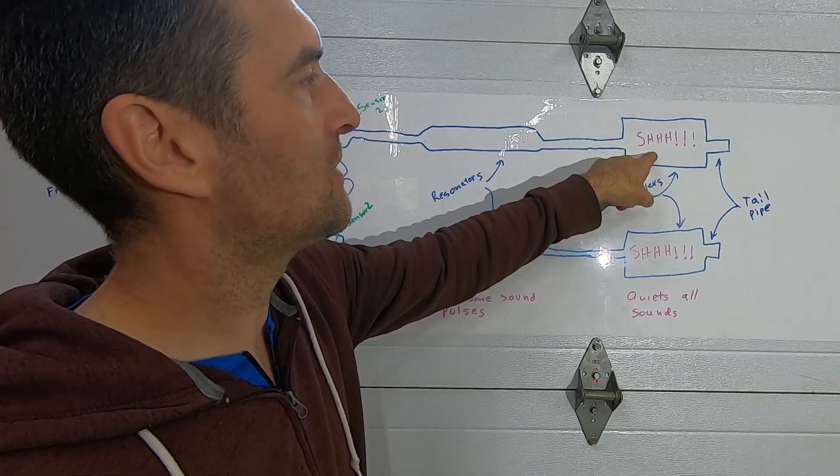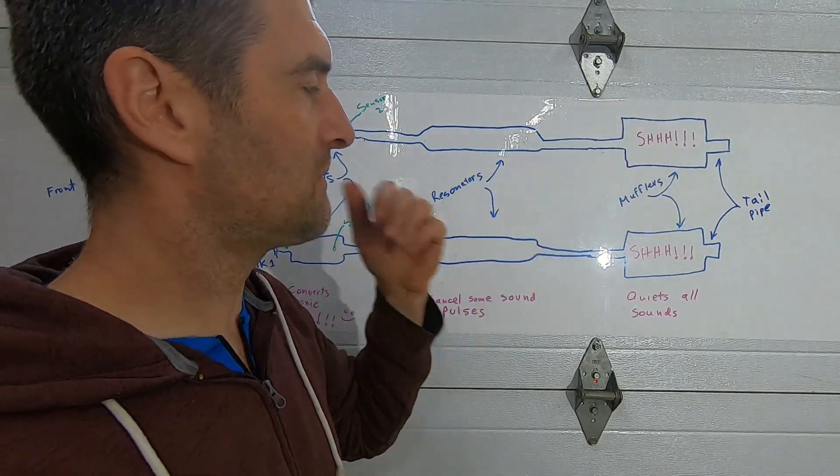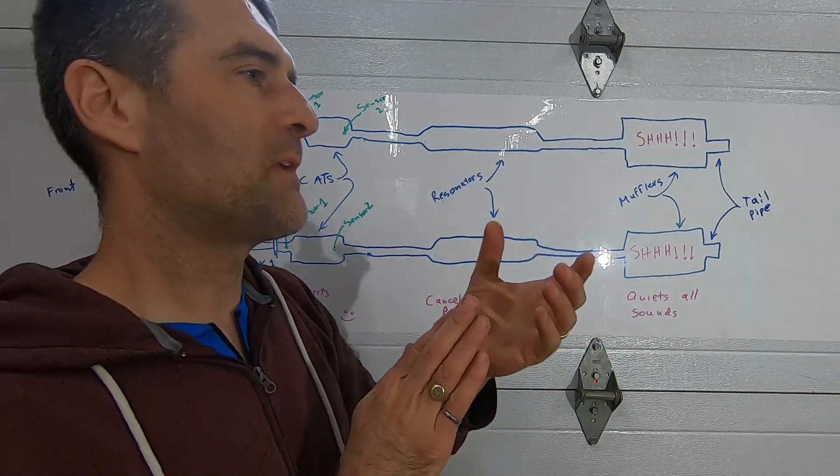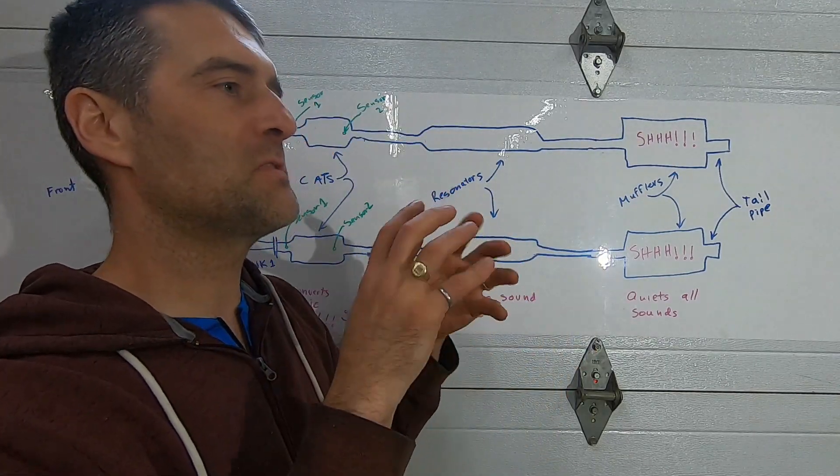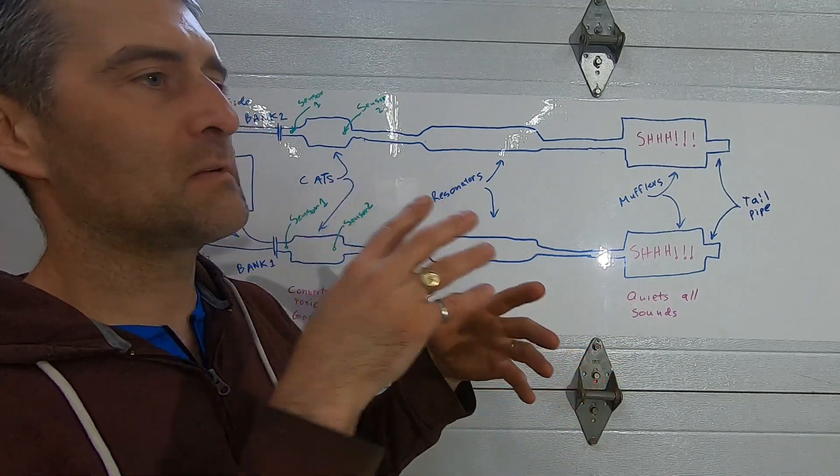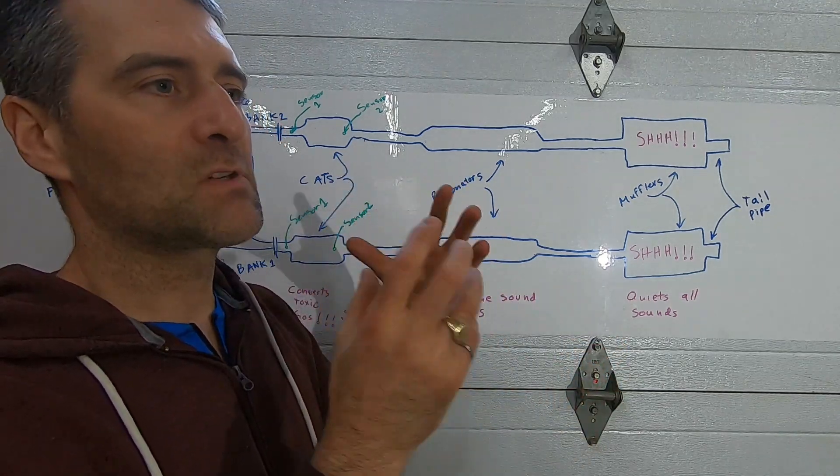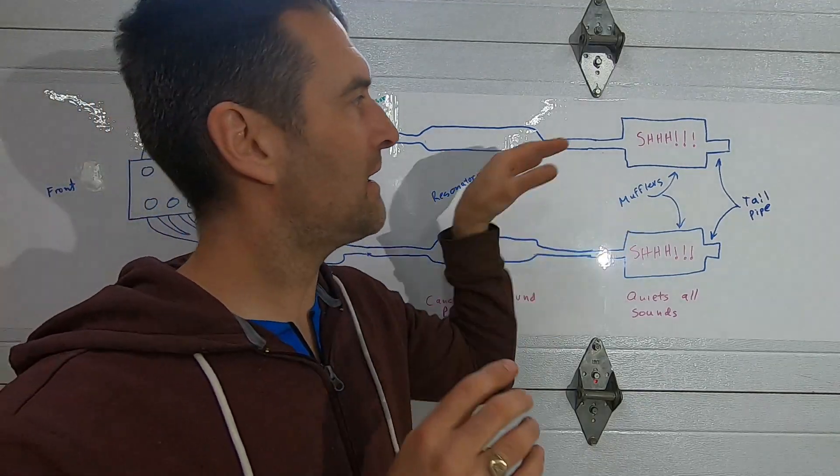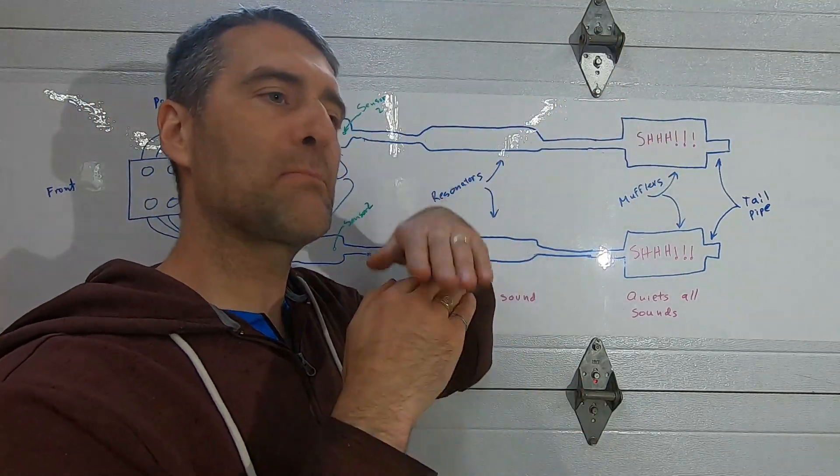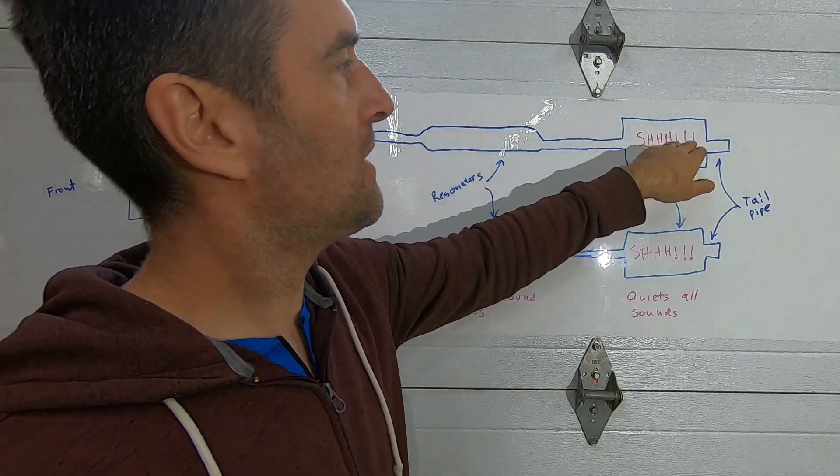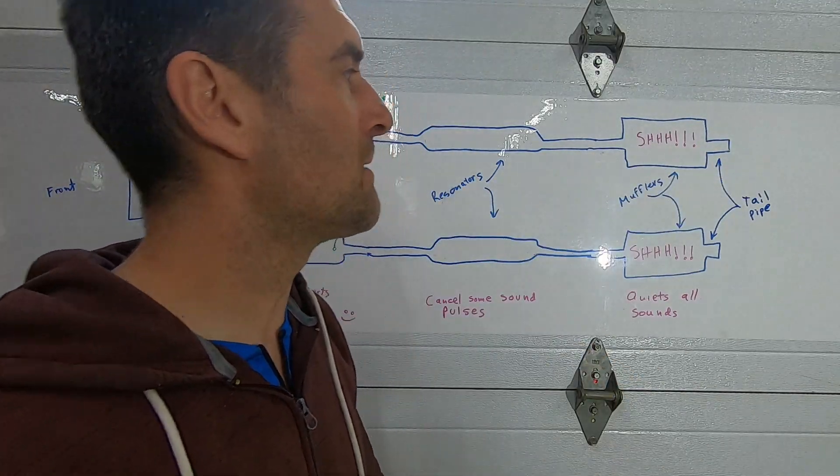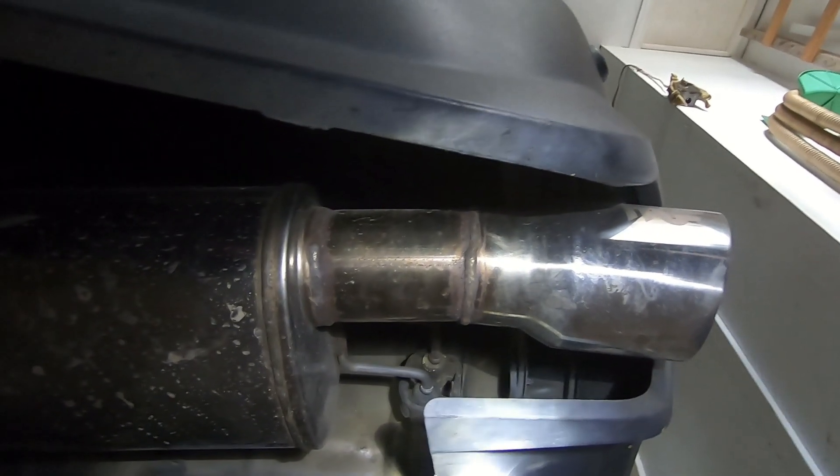Then the gases travel down to the muffler. The muffler has a bunch of restrictive ports in there - the gas will go around a corner and back through a corner and through some wire mesh and sometimes through some insulation called packing. All of that effort will cause the amplitude of the sound or the volume of the sound to diminish.